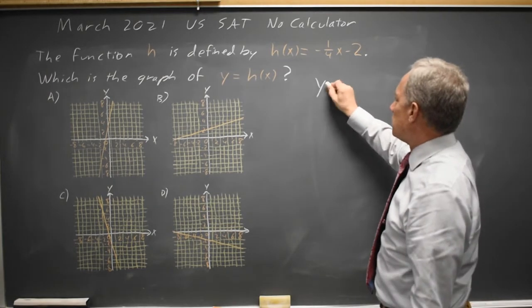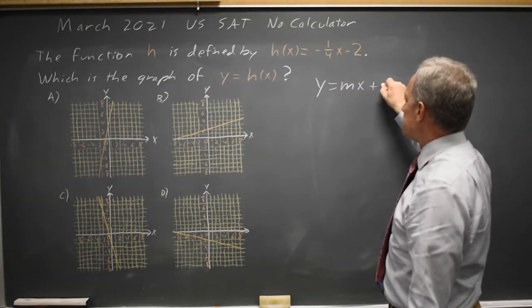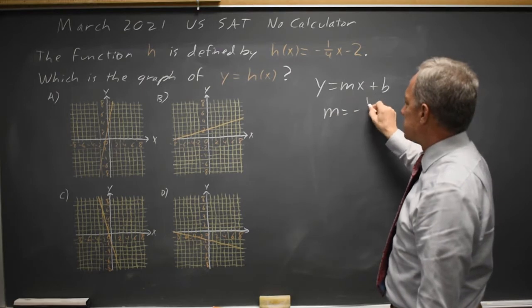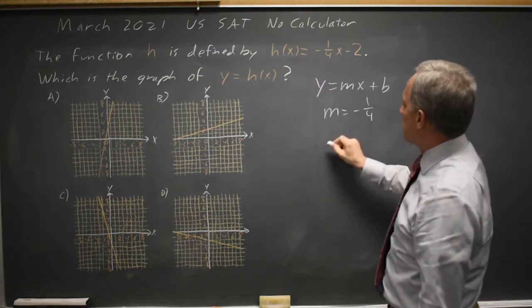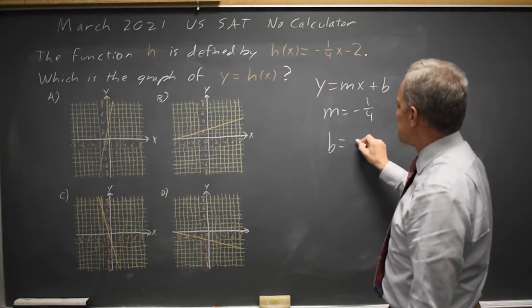This is the form y equals mx plus b where m the slope is in this case negative one-fourth and b the y-intercept is in this case negative two.